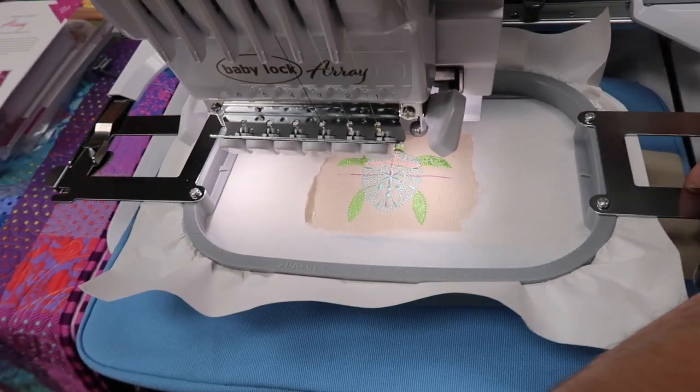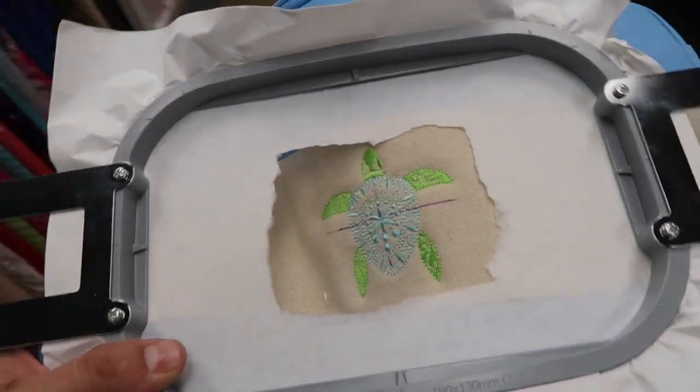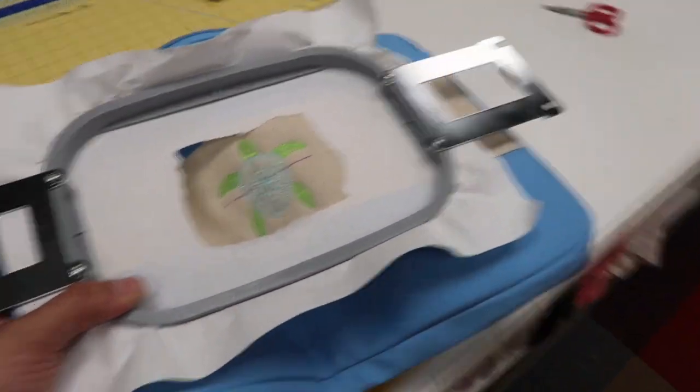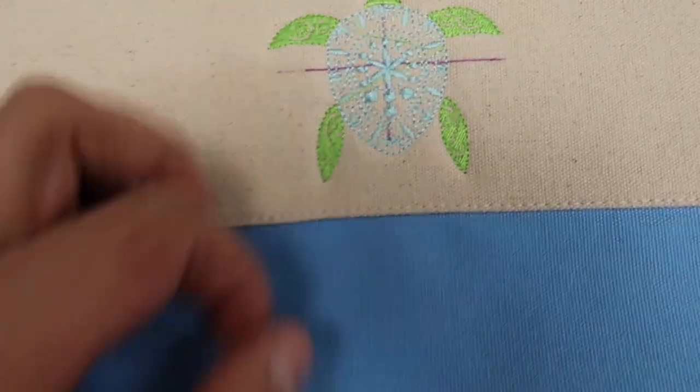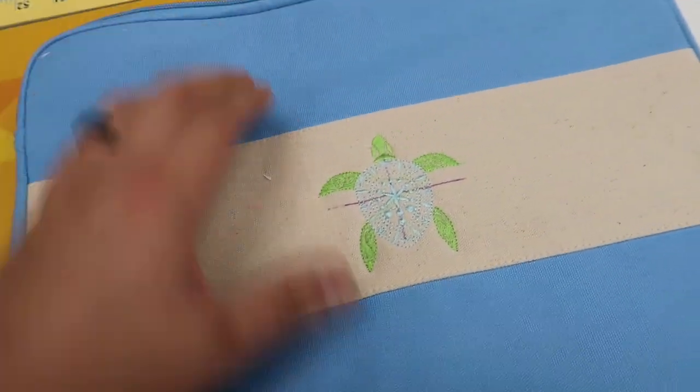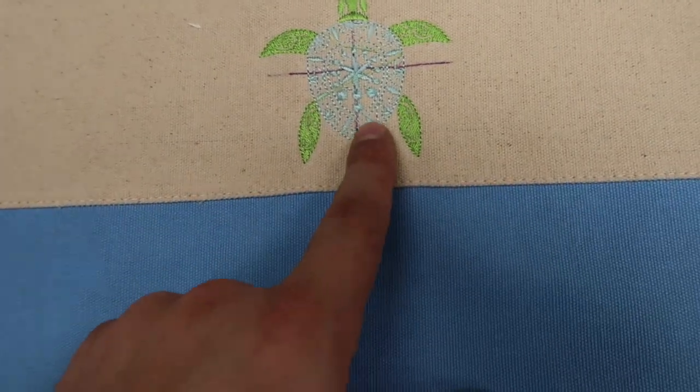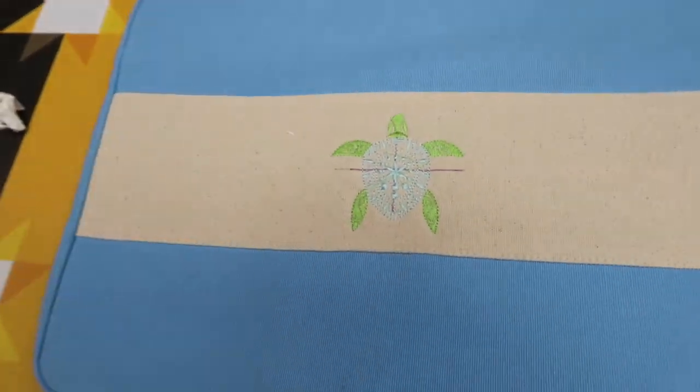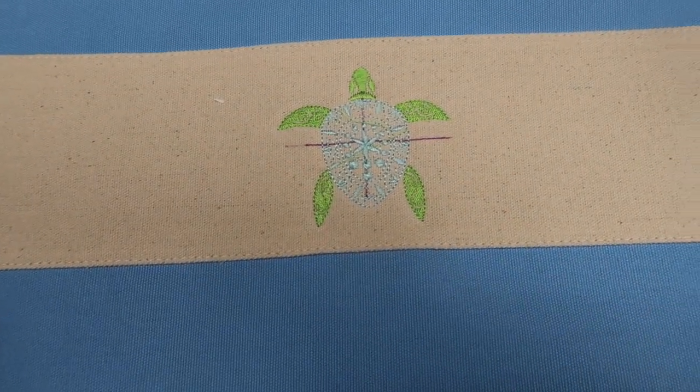Done. Now you can take it, pop it out of your machine and you can already see how easy the unhooping process is. That's it. That looks very good because it was so thick. There's no puckering from not having stabilizer, no issues there. And in case you are wondering, this design is built into the Baby Lock Array. So if you have that machine, dig around and look, there's some pretty cool designs built in.